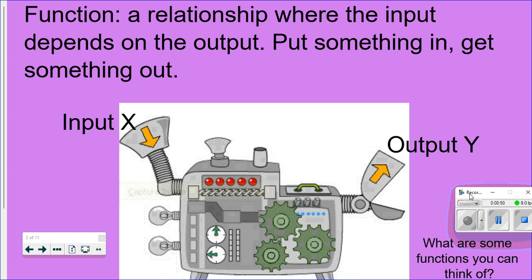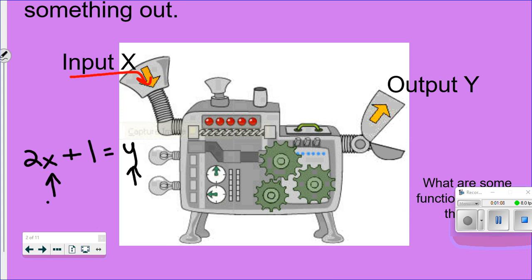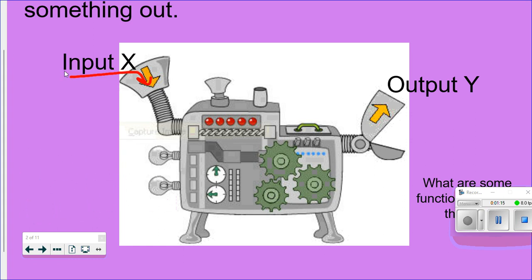This is a function machine — if you put something in, it's usually x. For example, if you have 2x plus 1, you're going to put something in for x and solve it — that's what you get out. In life there are a lot of different types of functions. An easy one is a toaster: you put in bread and toast comes out.